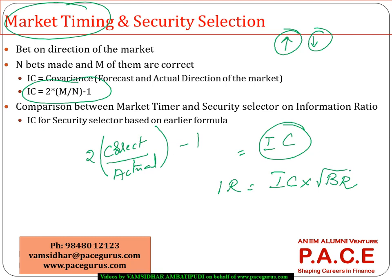The breadth definition is the same in both cases — it is the number of times the manager has made such predictions. However, the way the information coefficient is computed differs for a market timer versus a security selector.